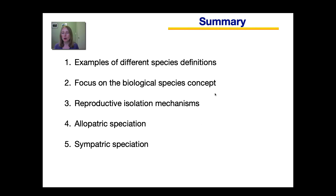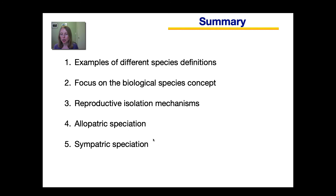To summarize what you learned in both part one and part two of the speciation lesson: in part one, I gave you some examples of different species definitions — with all of them having some problems, none of them being perfect — and we focused on the biological species concept and various reproductive isolation mechanisms that keep species separated. In part two, I told you about how speciation can occur either through allopatric speciation, where a geographic barrier separates a population and they eventually become different species, or sympatric speciation, where new species form in the same geographic area. That's it for today.